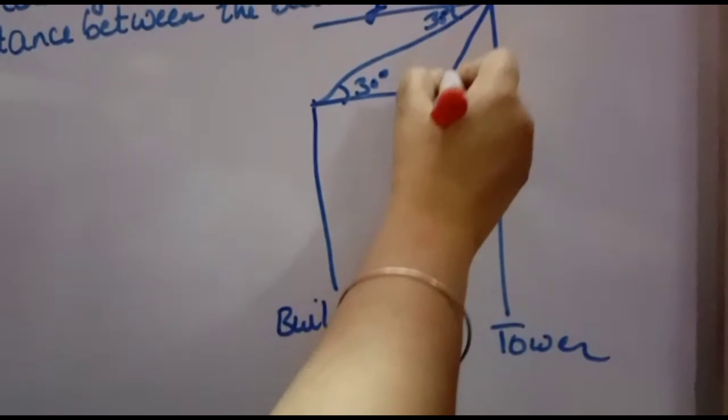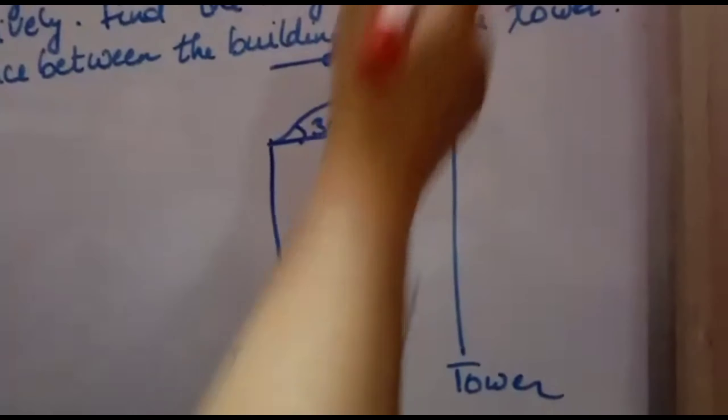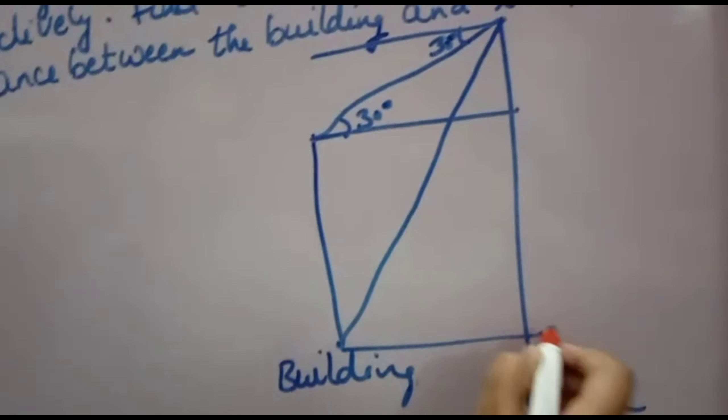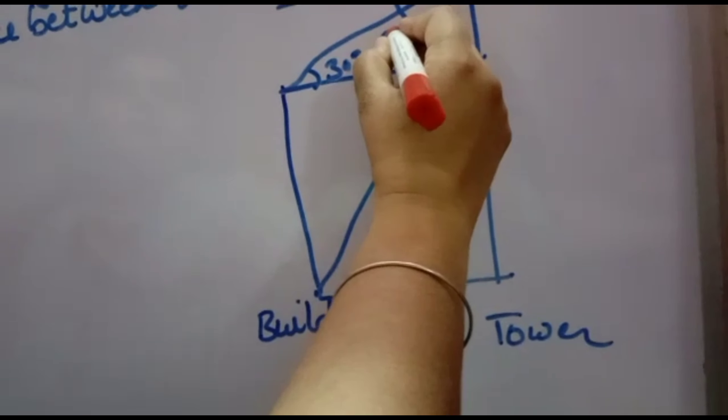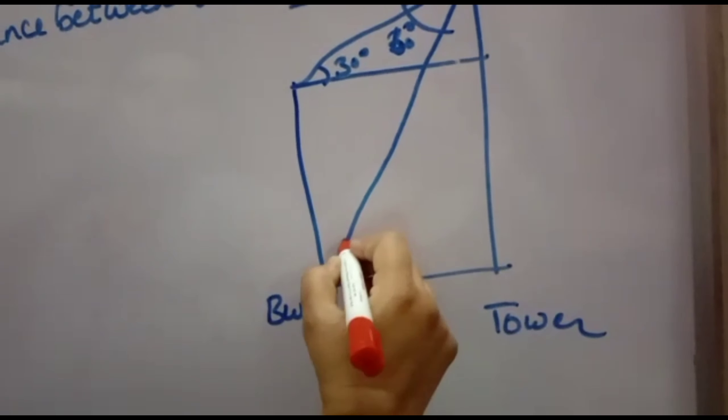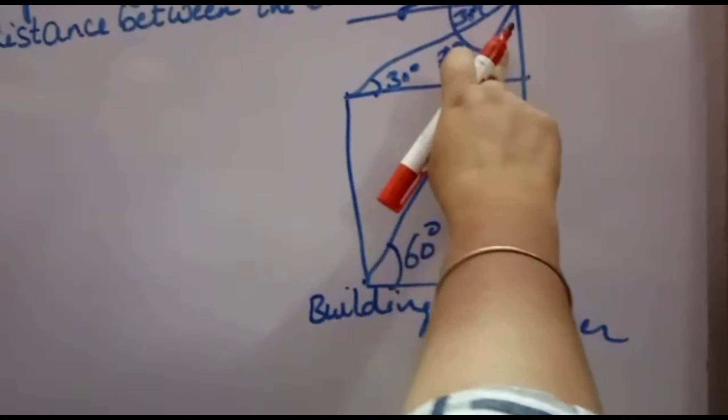Now angle of depression to the bottom of the building is 60 degree. That means this angle is 60 degree. If this is 60, this will also come 60 degree because they are also alternate interior angles.